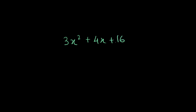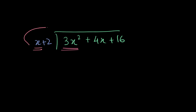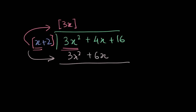First, let's take a polynomial: 3x squared plus 4x plus 16, and divide it using the traditional long division method by x plus 2. In the traditional method, you divide the first term by the first term of the divisor — the result comes up here, which is 3x. Then you multiply by the divisor, getting 3x squared plus 6x, subtract, and it becomes minus 2x. Then you divide again, and it just goes on forever.